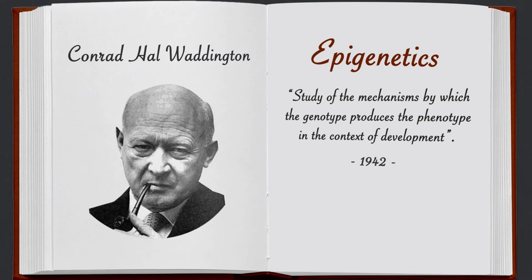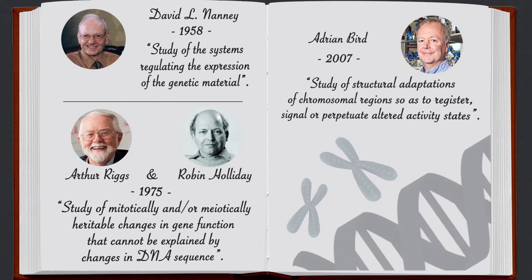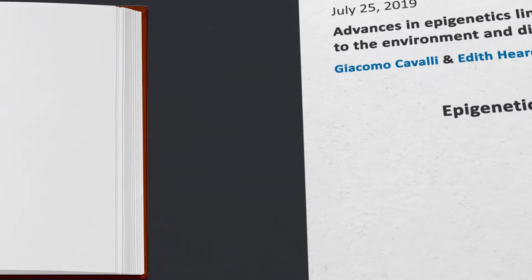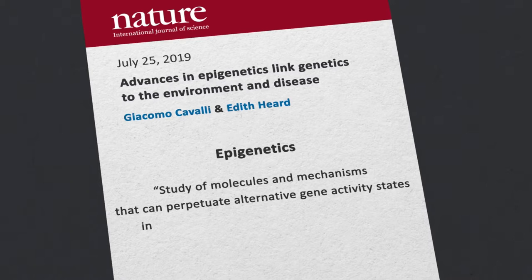Conrad Waddington defined epigenetics in 1942 as the study of the mechanisms by which the genotype produces the phenotype in the context of development. Since then, epigenetics was redefined multiple times. We define epigenetics as the study of molecules and mechanisms that can perpetuate alternative gene activity states in the context of the same DNA sequence.